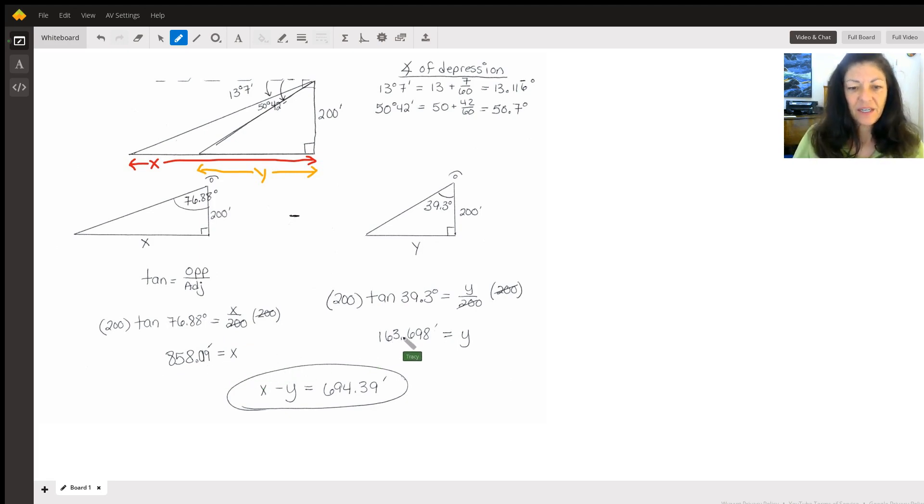For the second triangle, you're going to do the same thing. You're standing up here, now the angle is 39.3 degrees, so the tangent of 39.3 equals the opposite leg y divided by 200. Multiply by 200 on both sides and you'll get the answer for y in feet. Then you're just going to do the x minus the y to find this length here.